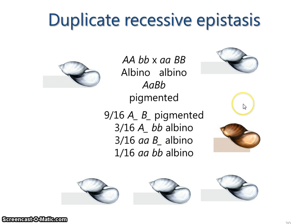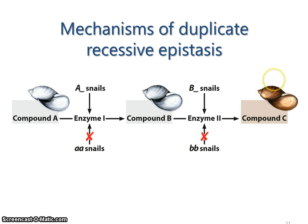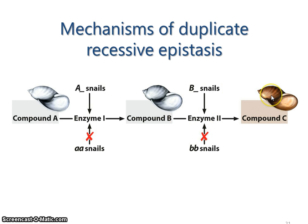You had a worksheet problem about duplicate dominant epistasis asking for a molecular mechanism to explain it. The appropriate approach is to think about it in terms of two independent pathways: enzyme 1 can produce compound C, or enzyme 2 can produce compound C. If one of these is not being made, you end up with an albino snail shell color. So duplicate dominant epistasis can be explained by having two separate enzymes, either of which is sufficient to produce the required compound for pigmentation.